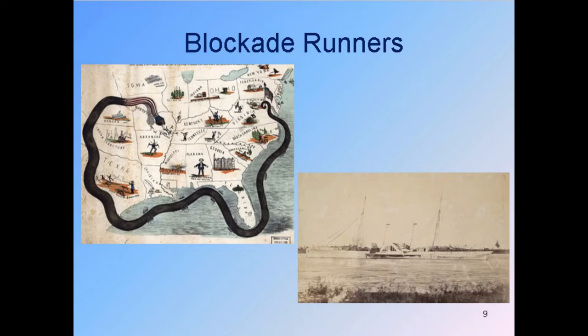The South started using blockade runners — fast ships that would try to outrun the Union ships stationed outside ports. As the Anaconda Plan continued, ports were captured one by one. The last Confederate port was somewhere in North Carolina, shut down in January 1865. By mid-war, New Orleans, Mobile Bay, and Virginia ports had been captured. In Florida, Key West, Jacksonville, Tampa, and Pensacola were all captured within the first couple of years.